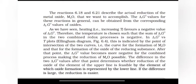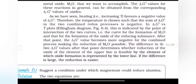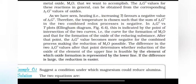A reaction describes the actual reduction of metal oxide that we want to accomplish. The ΔG values for these reactions in general can be obtained from the corresponding ΔG values of oxides. As we have seen, heating favors a negative value of ΔG. Therefore the temperature is chosen such that the sum of ΔG in the two combined redox reaction is negative. In ΔG versus T plots, Ellingham diagram, this is indicated by the point of intersection of two curves, that is the curve of the formation of MxO and that for the formation of the oxide of the reducing substance.